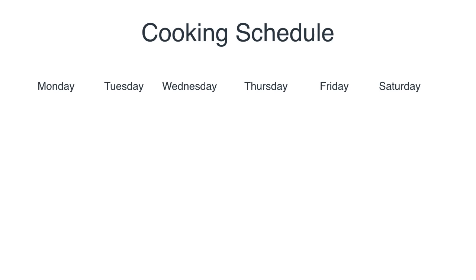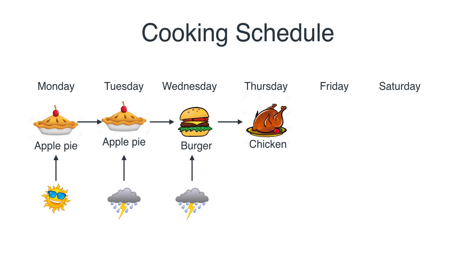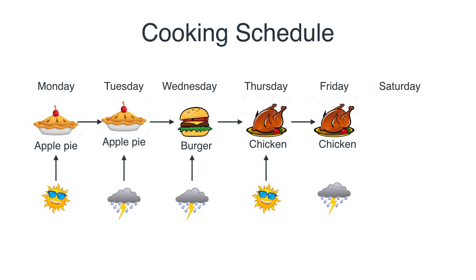Here's an example. On Monday he made an apple pie. On Tuesday the weather is sunny, so he doesn't cook anything new — we get an apple pie. On Wednesday it's rainy, so he makes something different: a burger, the next thing on the list. On Thursday, rainy again, he makes a chicken. On Friday it's sunny — we get chicken again. On Saturday it's rainy, so he cooks the next dish: an apple pie. On Sunday it's sunny, so apple pie again.